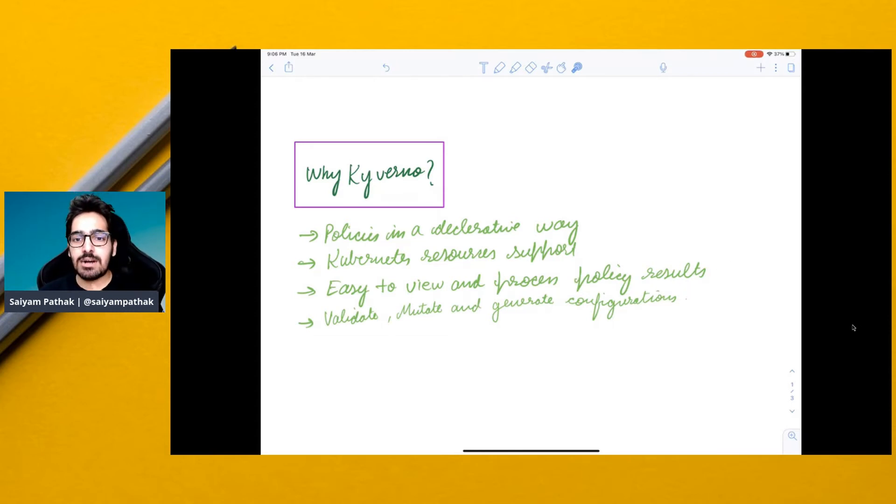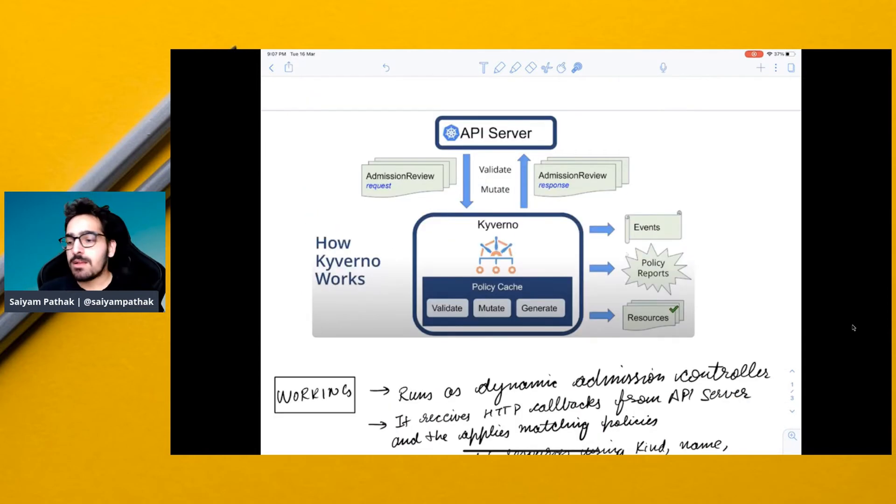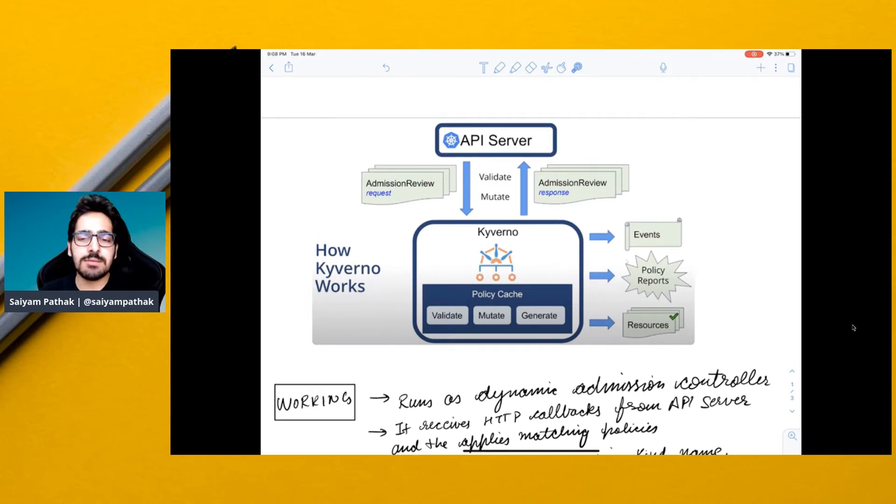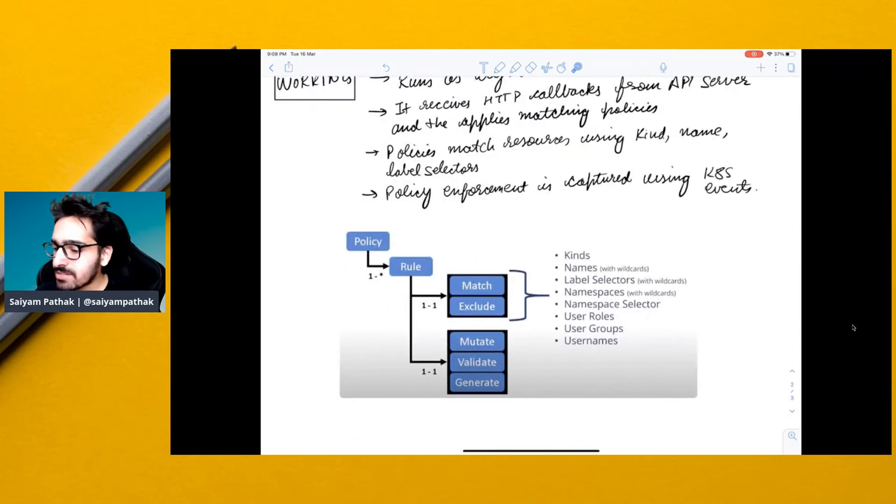Let's see how it actually works. Now Kyverno can be installed using kubectl or helm onto the cluster and it runs as a dynamic admission controller. It receives all the HTTP callbacks from the API server and then applies the matching policies. So once the objects are selected, then they are validated, mutated or they generate a resource. And you can see them as policy reports, Kubernetes events.